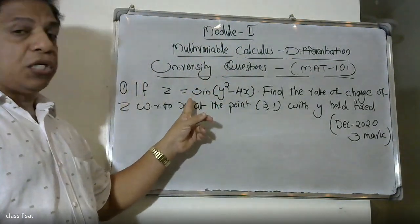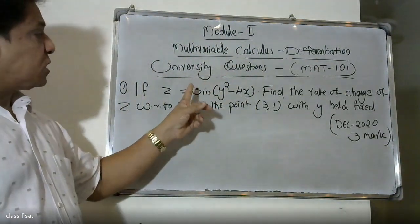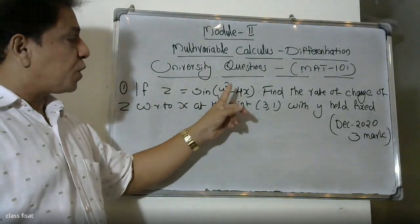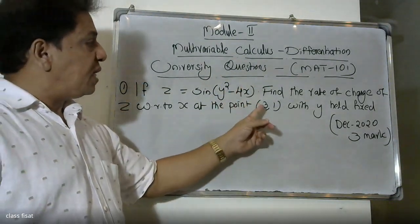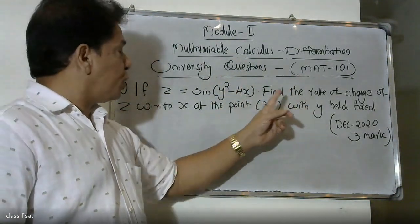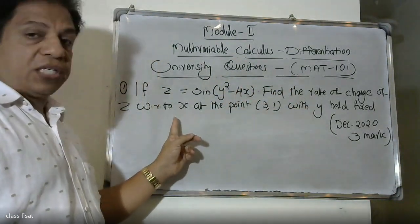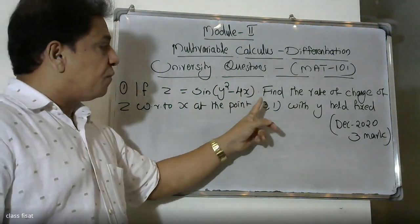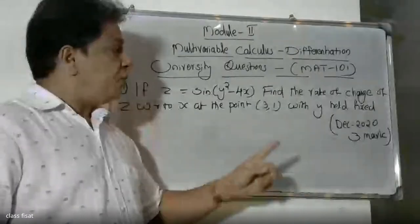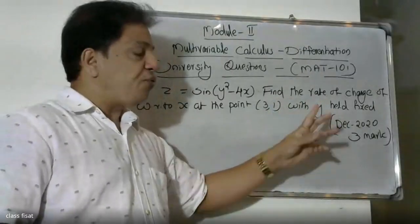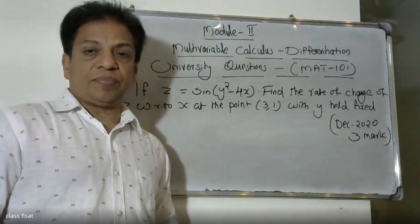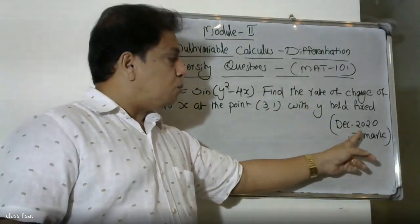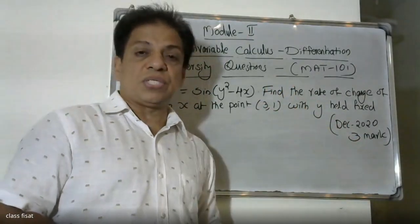If Z is equal to sine of (y-squared minus 4x), find the rate of change of Z with respect to x at the point (3, 1) with Y held constant. This is a 3-mark question.